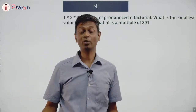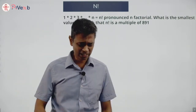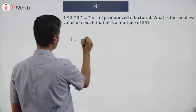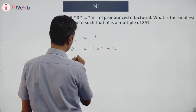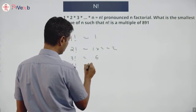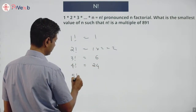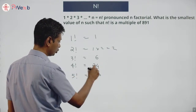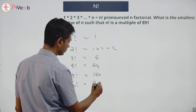891 is such a large number and I'm already worried. For questions I don't understand, I love breaking it down by writing a few numbers. 1 factorial is 1, 2 factorial is 2, 3 factorial is 6, 4 factorial is 24, 5 factorial is 120.